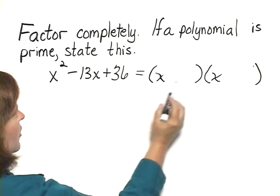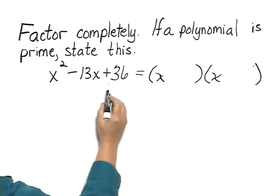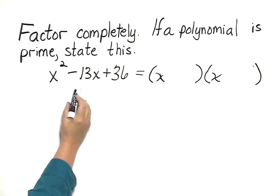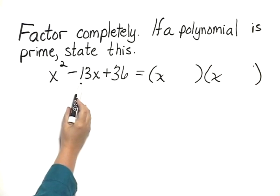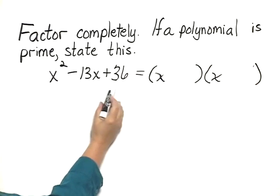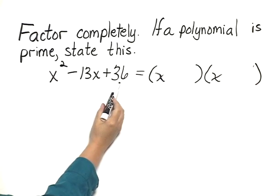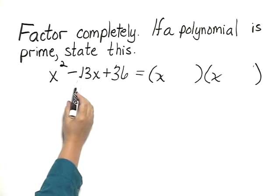The last terms, the product of those numbers will be 36, and the sum of those numbers will be negative 13. You can make a chart of all the pairs of factors of 36 and their sums to find which ones add to negative 13.